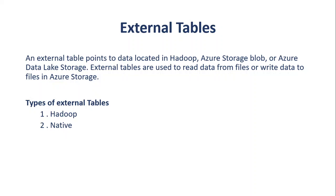There are two types of external tables in Azure: Hadoop and Native. The main difference between them is the type of data source they point to. Hadoop is for Hadoop-related files — for example, Parquet, ORC, and anything coming from HDFS — while Native is for delimited file types not coming from Hadoop or HDFS. Data Lake Gen 2 is Hadoop compatible, so for that the type is Hadoop. Hadoop external tables are only available in the dedicated SQL pool, while Native is mainly available in the serverless pool but can also be provisioned in the dedicated SQL pool.